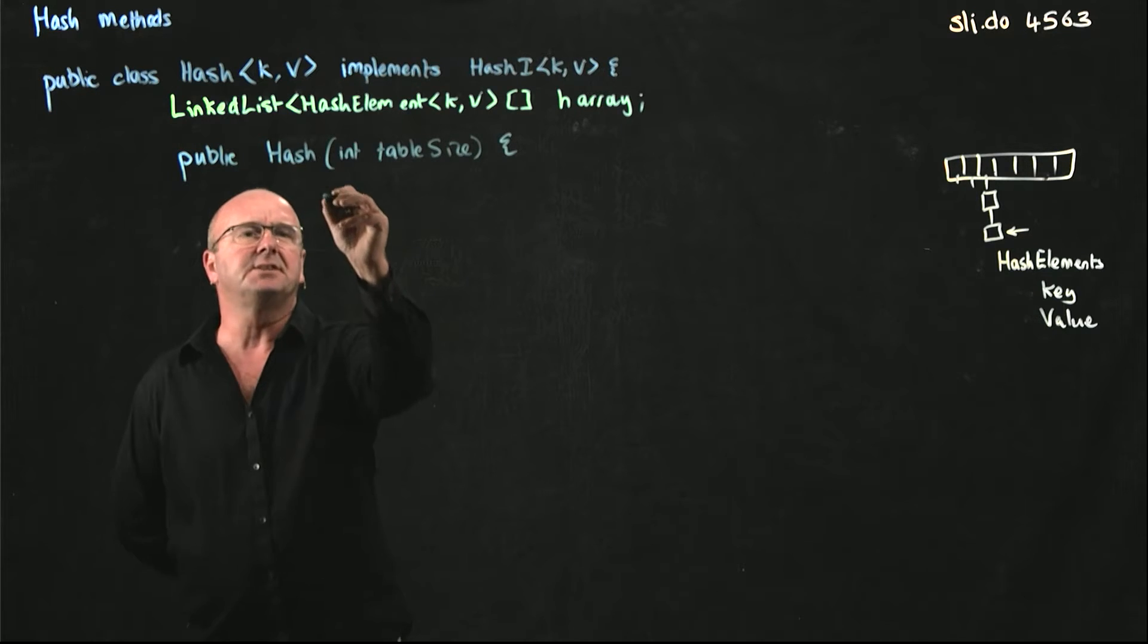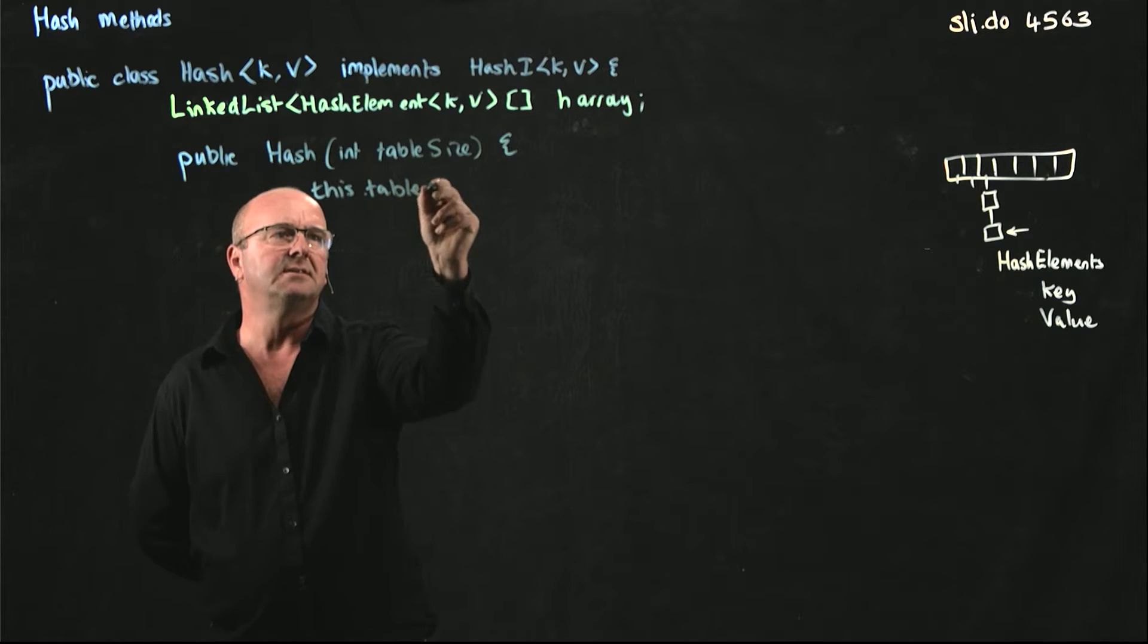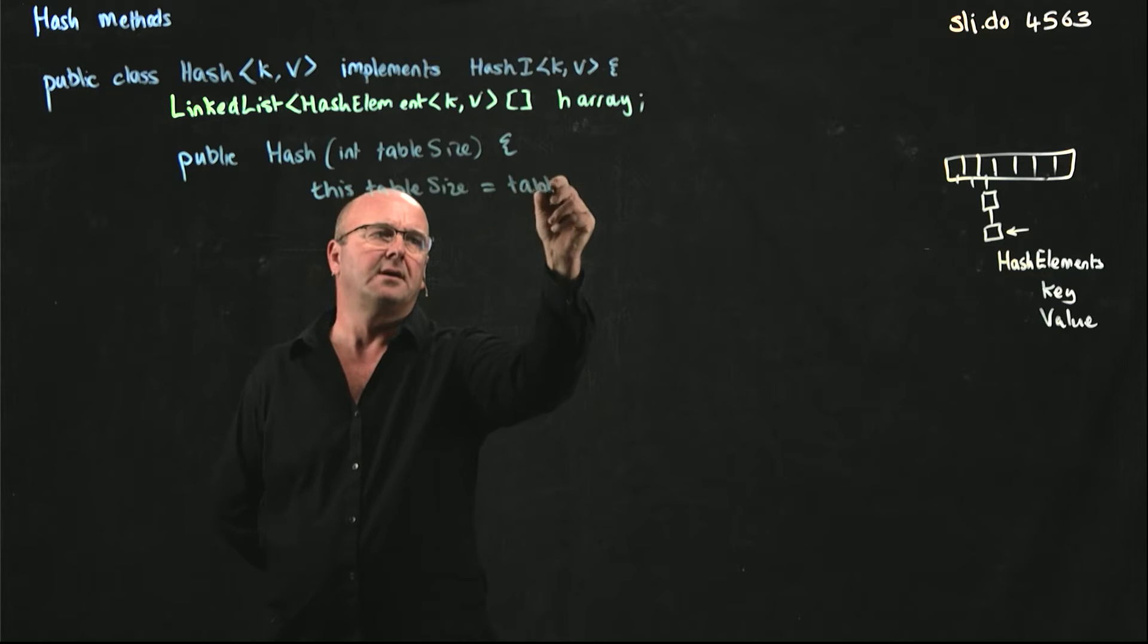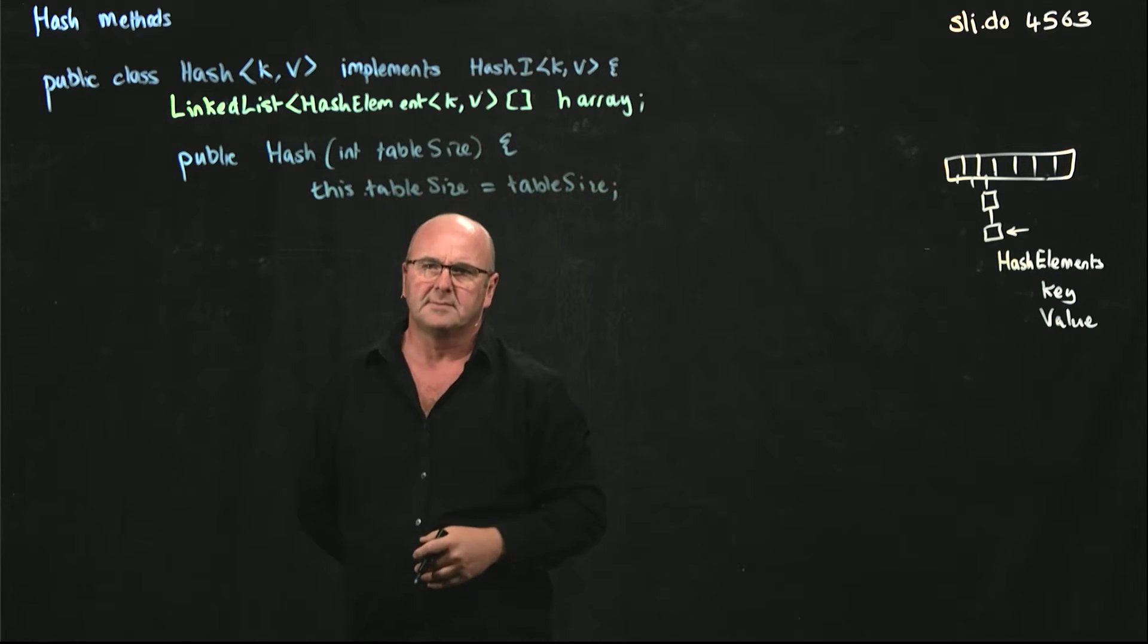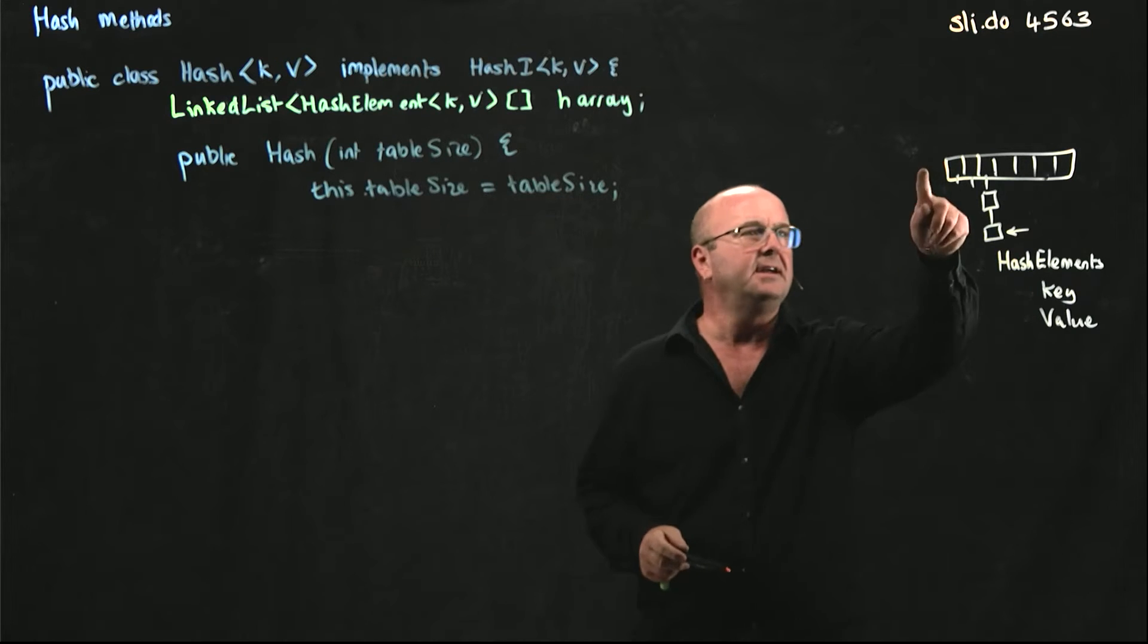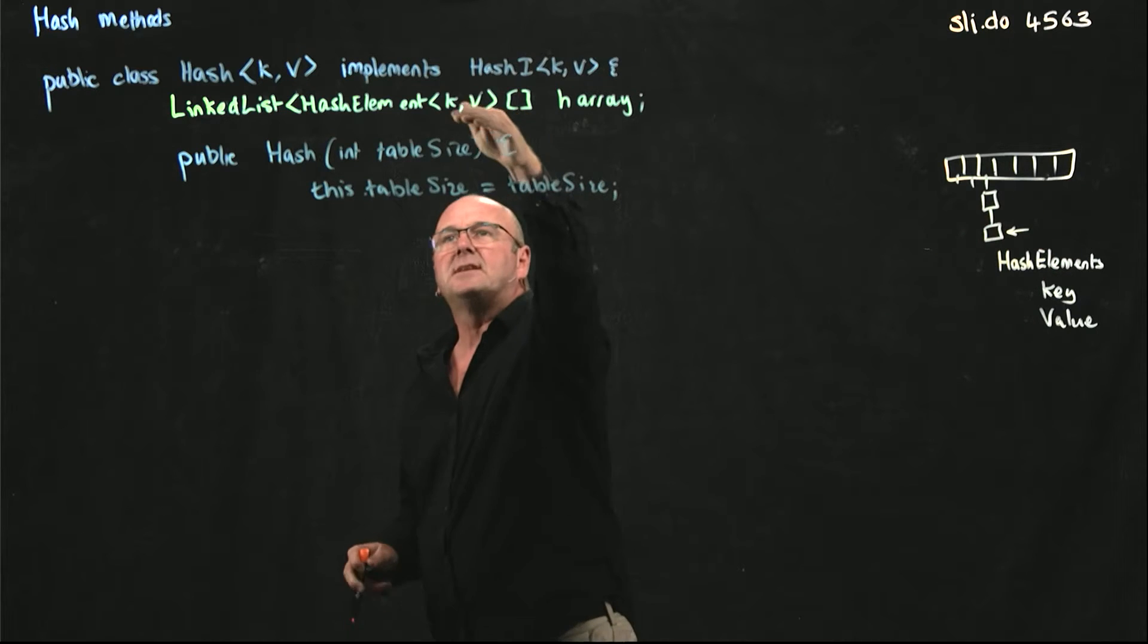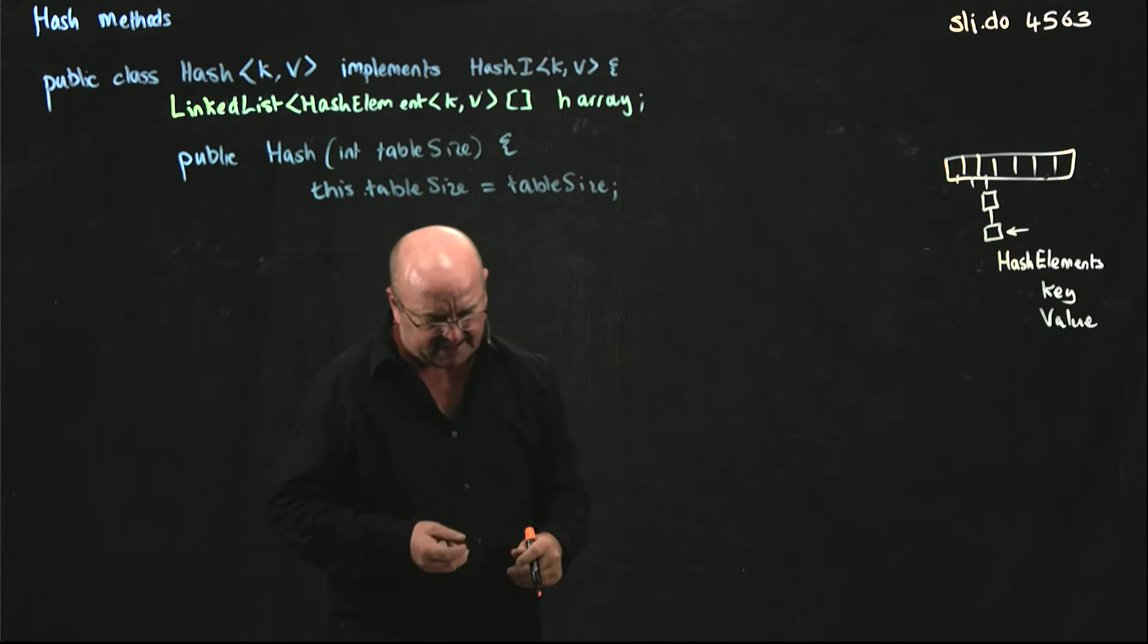So the first thing we need to do is just remember the table size so that we can come back to it. And now we've got to declare our array, which we've declared up here the variable name, but now we have to actually initiate that as an array.